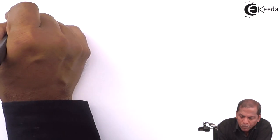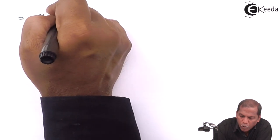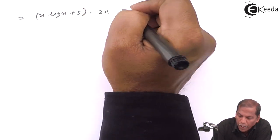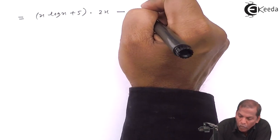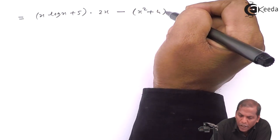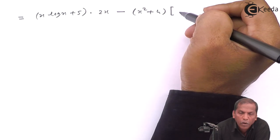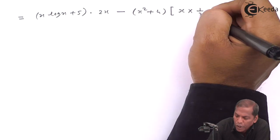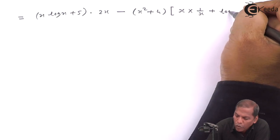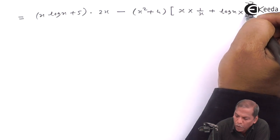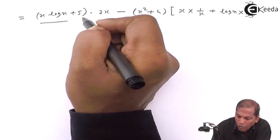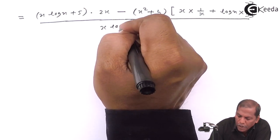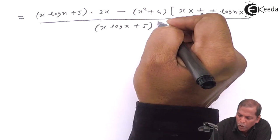So the next step: (x into log x plus 5), written as it is, into 2x, minus (x squared plus 4), written as it is, into bracket x into derivative of log x which is 1 upon x, plus log x into derivative of x which is 1. The whole function is divided by (x into log x plus 5) whole bracket squared.